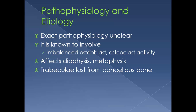Osteoporosis affects the diaphysis, which is the shaft of the bone, and the metaphysis, which is the portion of bone between the diaphysis and the epiphysis — the growth plate. As it progresses, the trabeculae are lost from the cancellous bone, which is the spongy tissue of bone, and the outer cortex thins to the point where even minimal stress will fracture the bone.